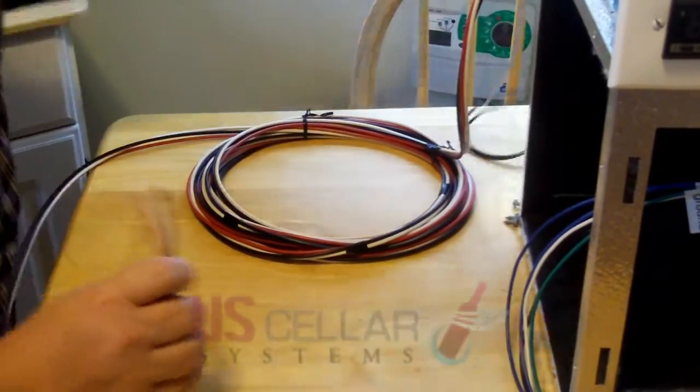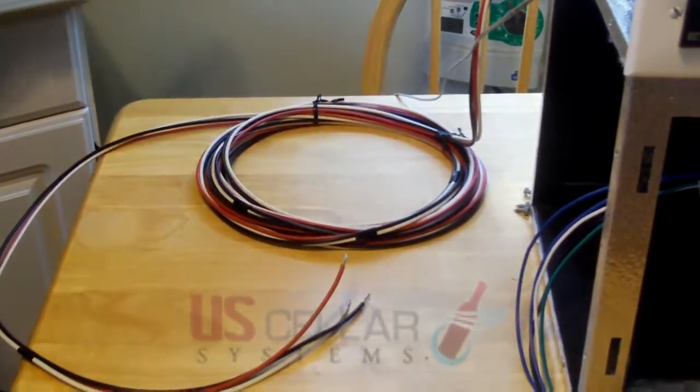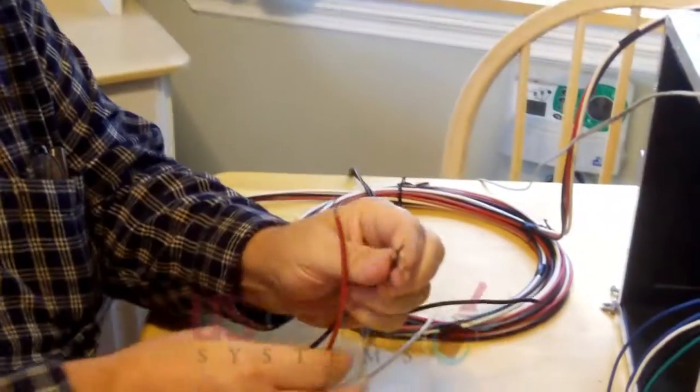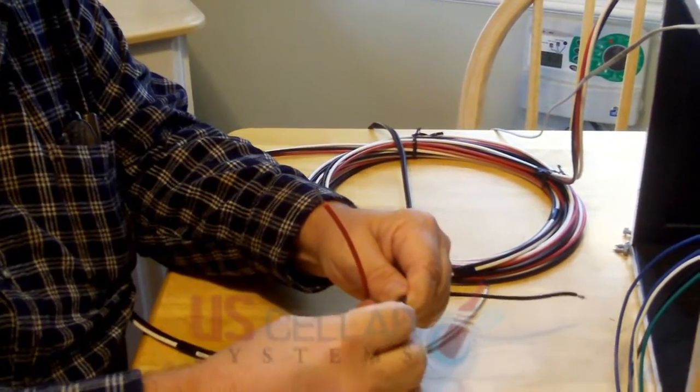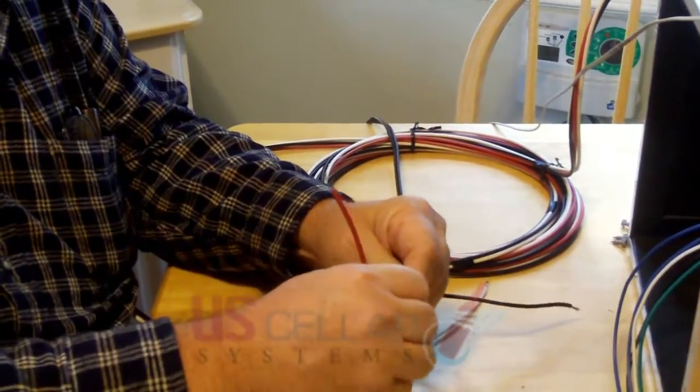The first place we'll start with is your power coming in from your circuit breaker box will be connected to the black wire. And you twist those together and place a wire nut on it.